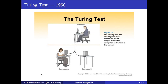If the interrogator is able to determine who is responding, that is considered a failure of the computer. If he is unable to identify whether the computer or the human is answering his questions, then we can say that the computer is behaving like a human being. That is called artificial intelligence — behaving almost like a human being. That is the target of artificial intelligence.